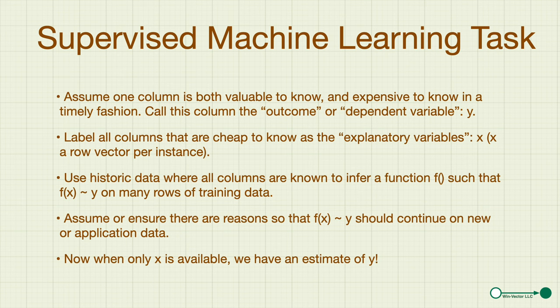How do you do this? You wait three months for the sales outcome to happen and merge that with older data. Now you have an example table saying here's the future as a function of the past. Then you learn an approximation of that table as an actual implementable function.